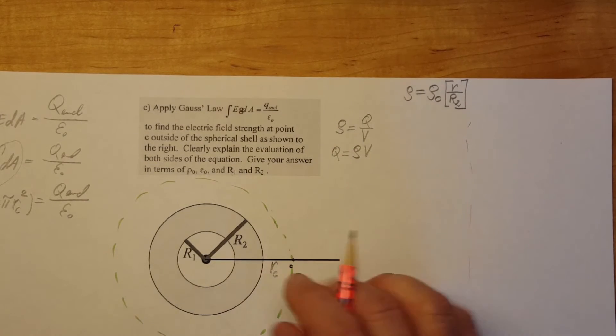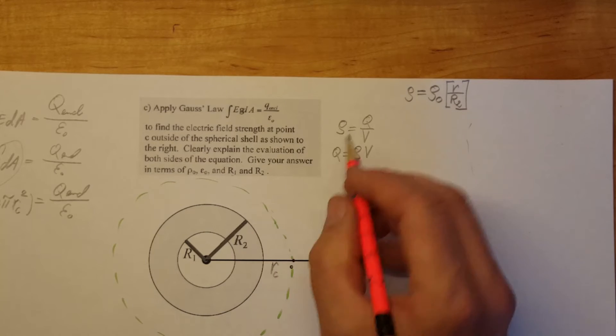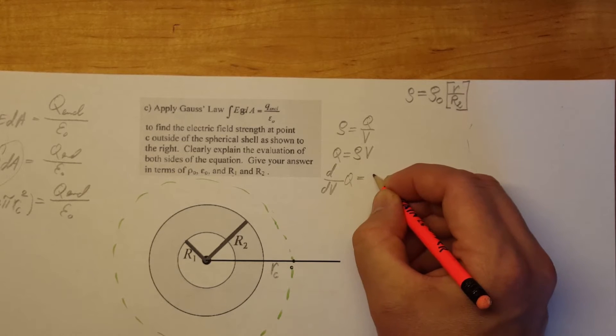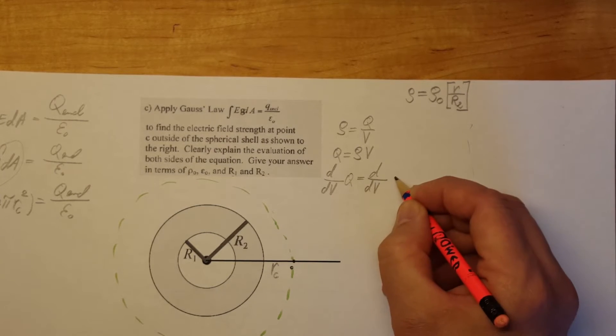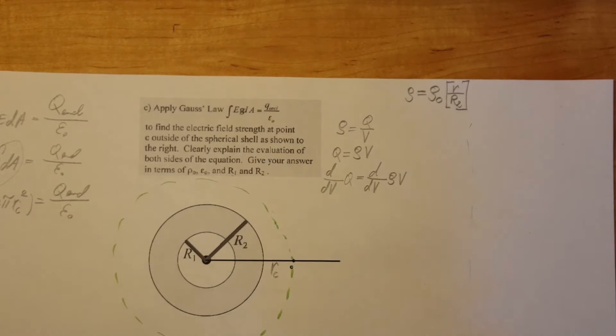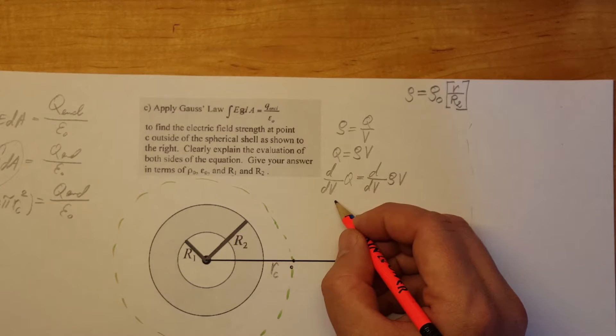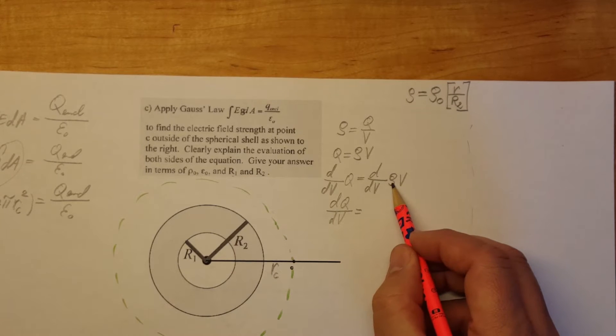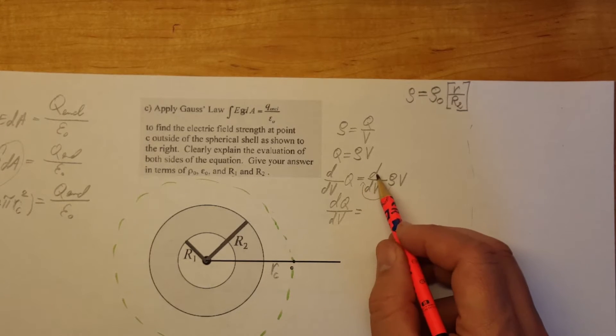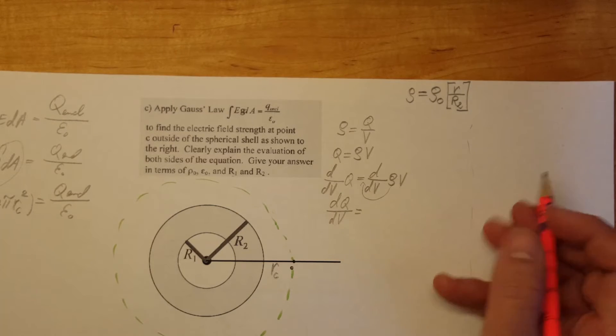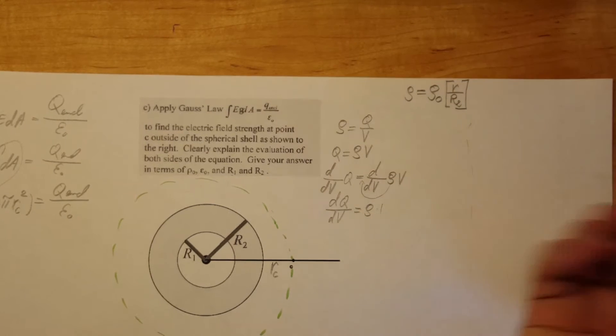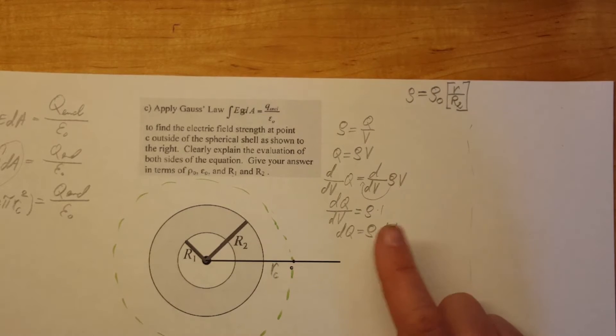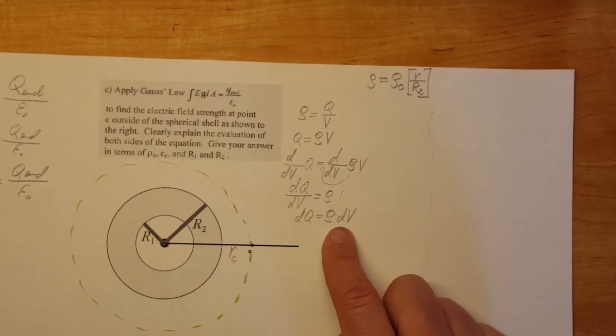Now we're going to take derivative of both sides with respect to V. So derivative with respect to V of Q and derivative with respect to V of Rho V. From here we can get dQ over dV equals our Rho is constant so we can move it in front of our derivative and the derivative of V with respect to V is just 1. So Rho times 1 and we have dQ equals Rho dV.